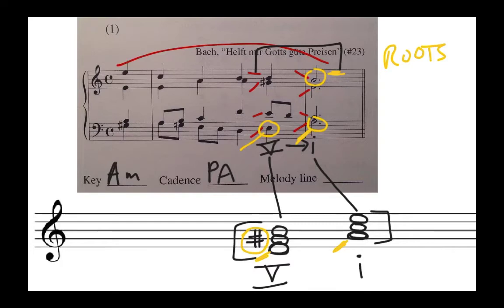And then lastly, what does our melody line do? Well, it goes from B to A. So that's the second scale degree to the first scale degree. We fill that in two to one. You could have also said it goes from re to do if you were using solfege. So in this example, we are in A minor. It's a perfect authentic cadence. And the melody line goes from two to one.